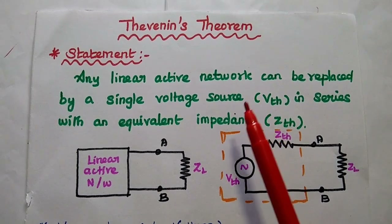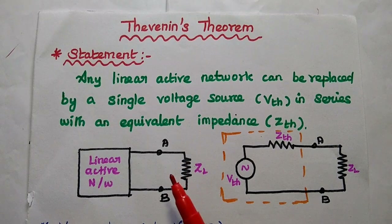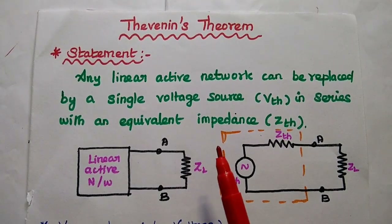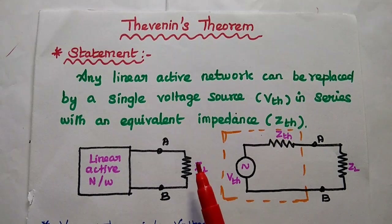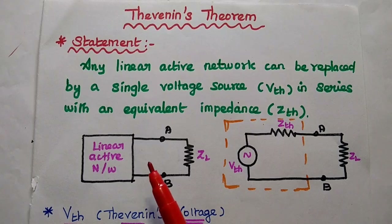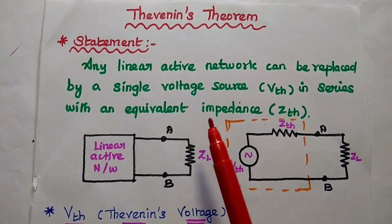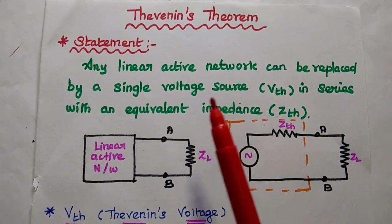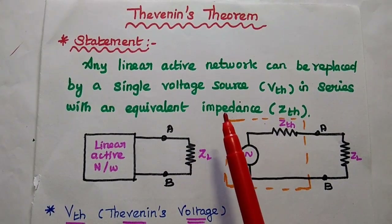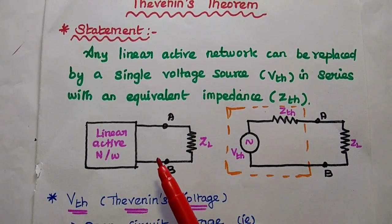For example, in power system analysis, the complex linear network can be simplified using Thevenin's theorem and also to find out the branch current. Here we can consider only linear active networks, because Thevenin's theorem is not applicable for non-linear active networks. Non-linear means the circuit which is having BJT, FET, or MOSFET transistors.